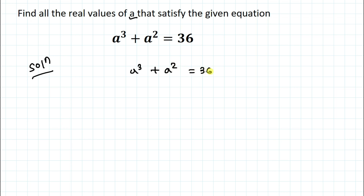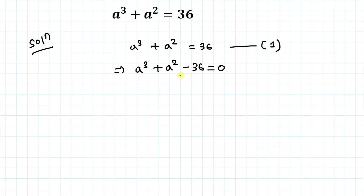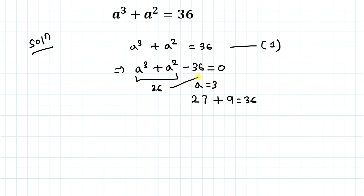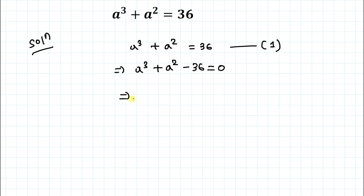We have a³ + a² = 36 — let's call this equation 1. We can rewrite it as a³ + a² − 36 = 0. To satisfy this equation, we assume a = 3 by trial and error: 3³ = 27 and 3² = 9, giving 27 + 9 = 36, so 36 − 36 = 0. This confirms that (a − 3) is one factor.